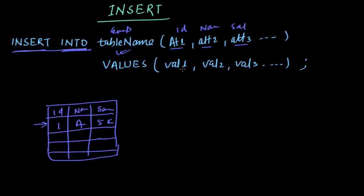And then we will have to insert values. So the value will be, let's say, 1, then A, and 5k. Once we enter, it will insert the value 1, A, and 5k into this table. Now in general what happens is this id field is kept auto increment.